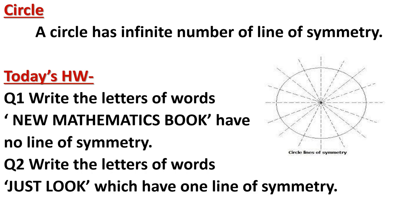Question 1: Write the letters of the words 'NEW MATHEMATICS BOOKS' that have no line of symmetry. In that phrase, identify which letters have no line of symmetry. Question 2: Write the letters of the words 'JUST LOOK' that have only one line of symmetry — find and write down only those letters.